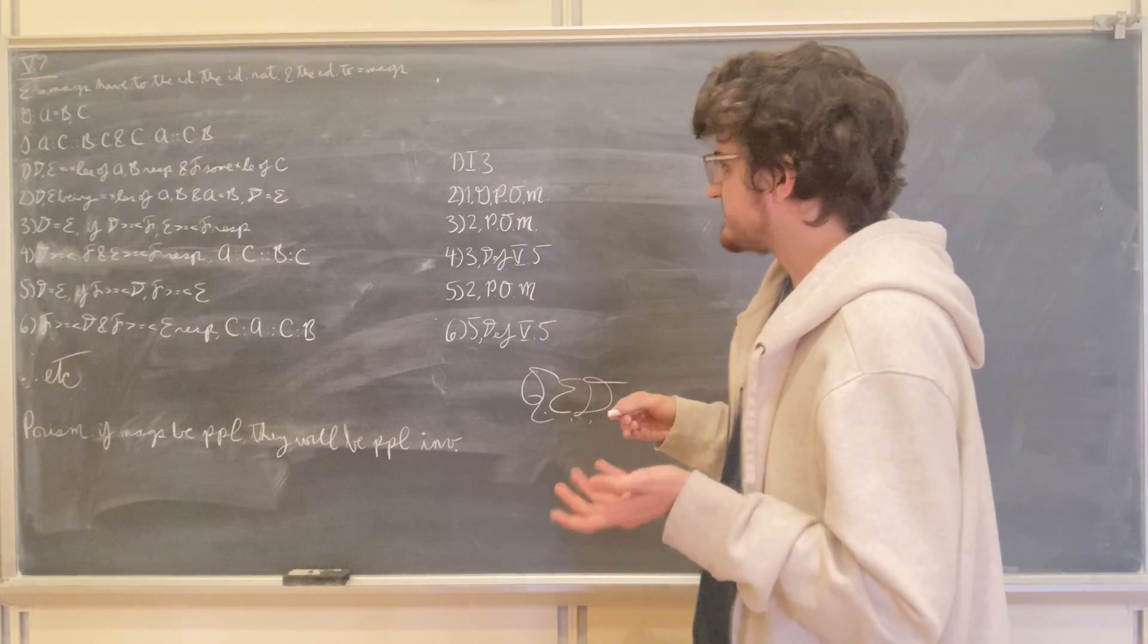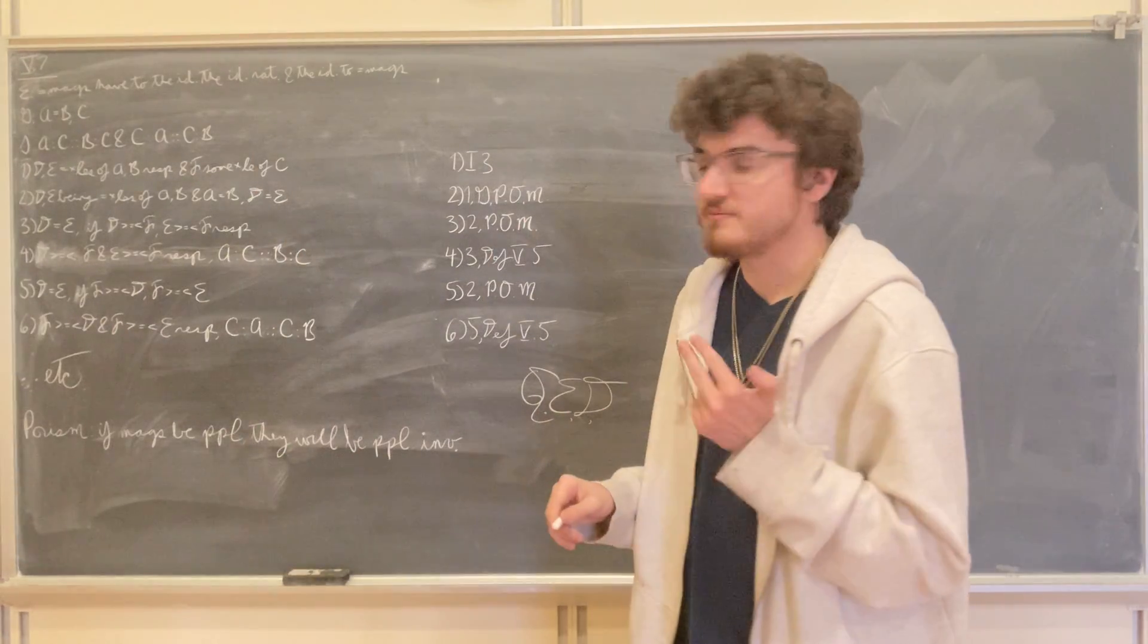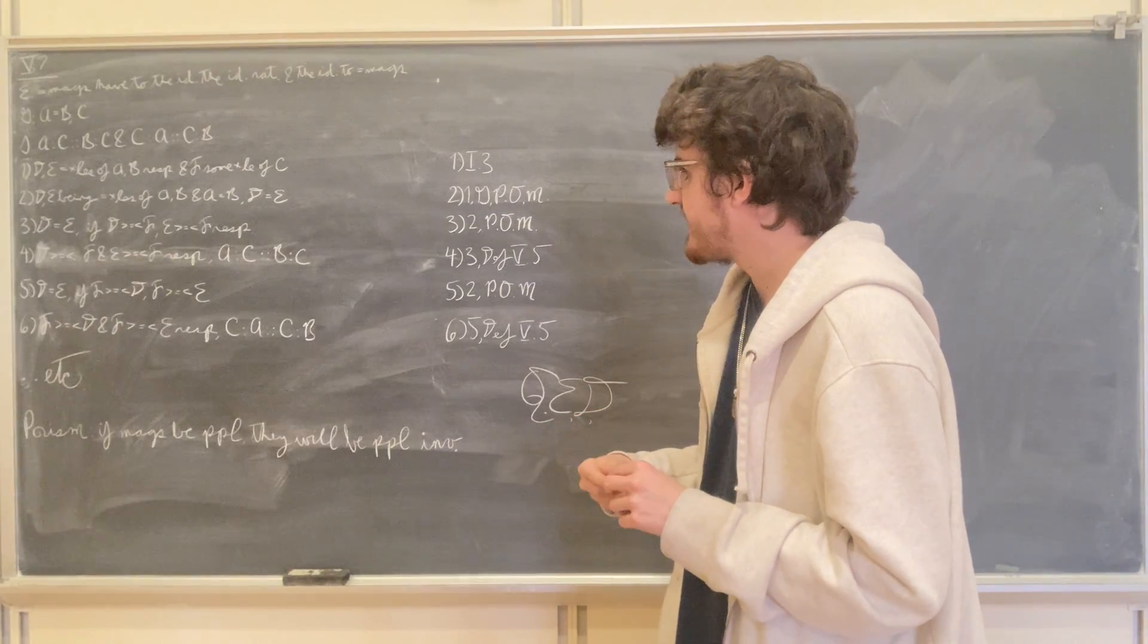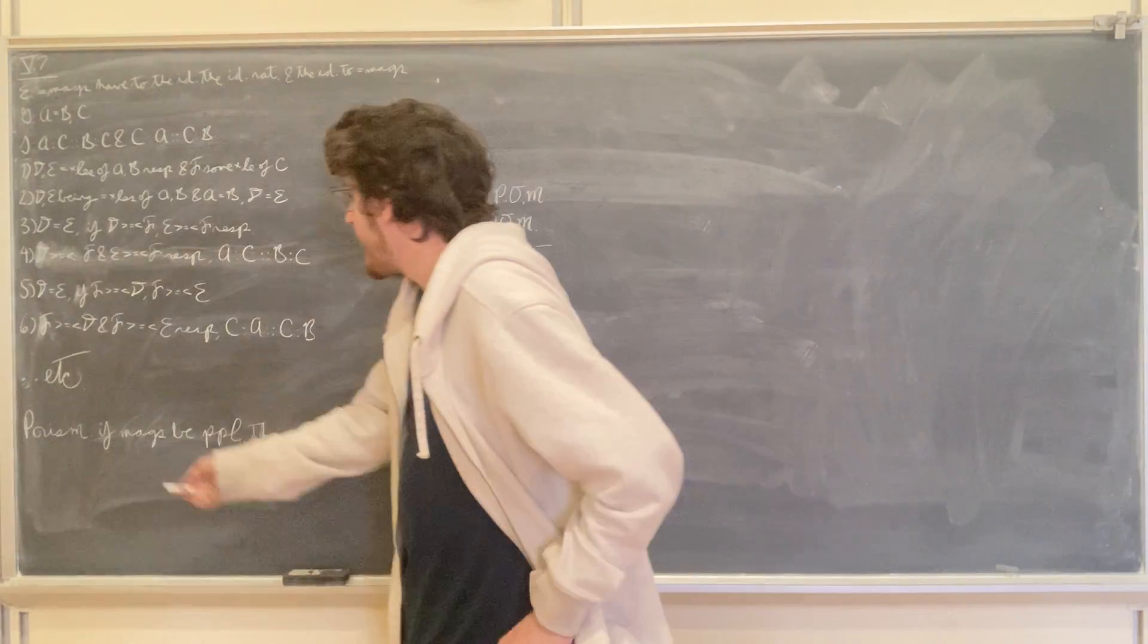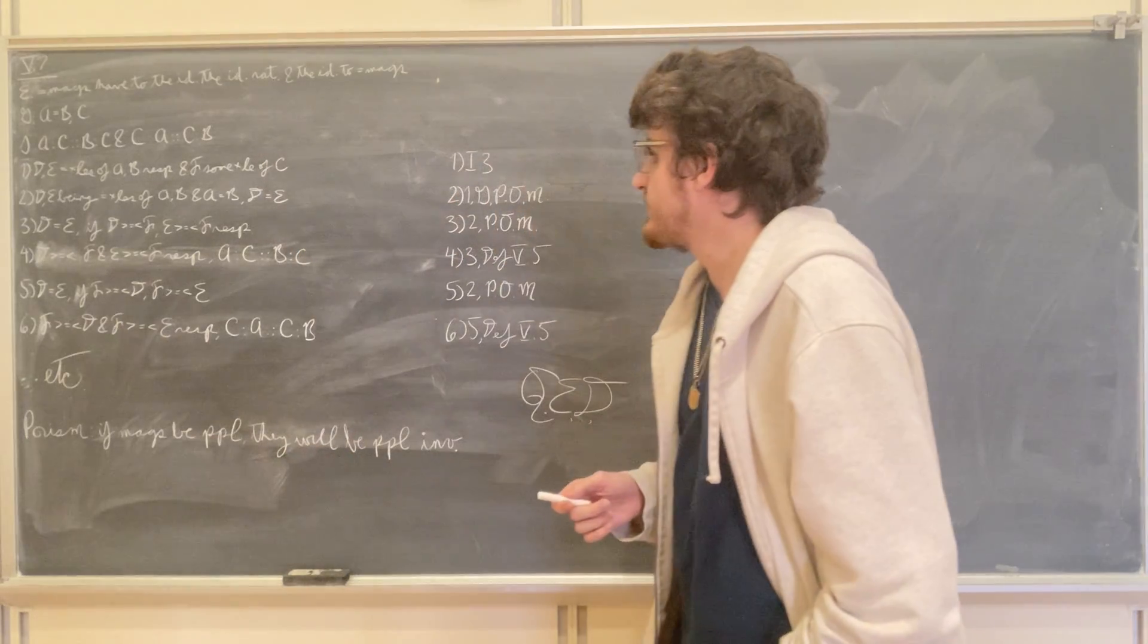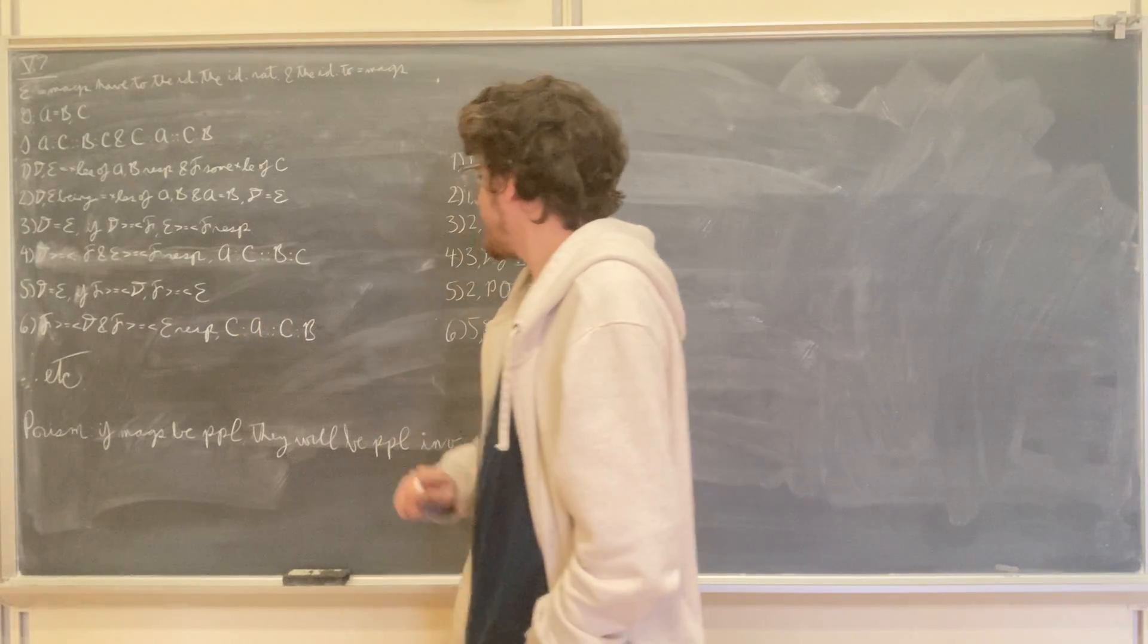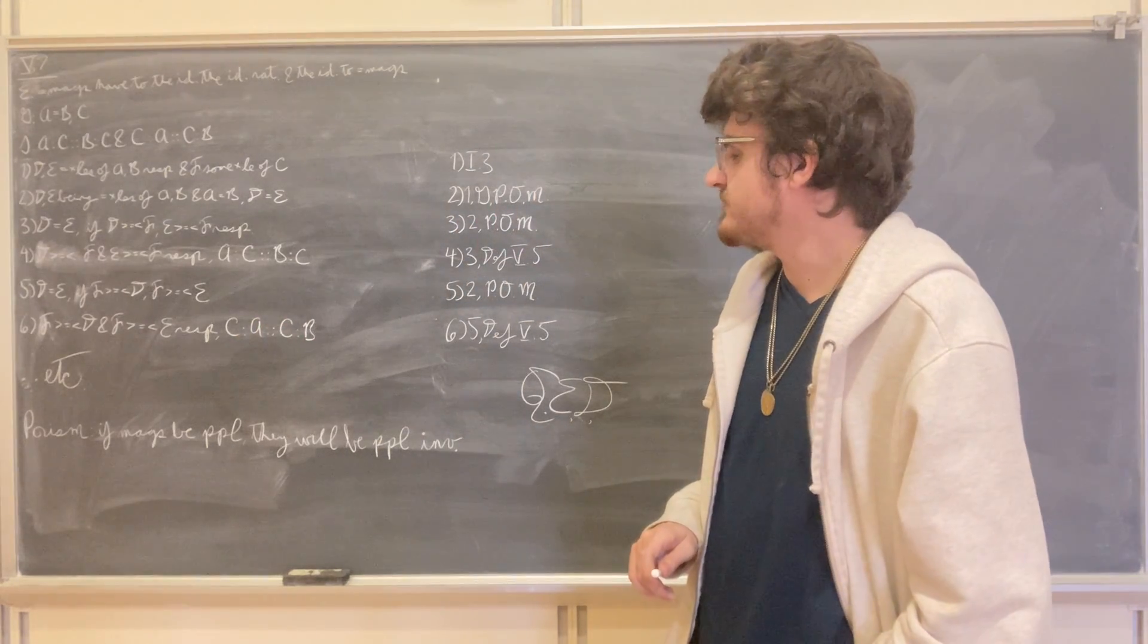And again, this is a situation of the equal multiples of C, A, and B respectively, which means that we can invoke definition 5-5 to say that because F has the same relation to D that it has to E, we can say that as C is to A, so C is to B.